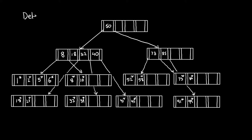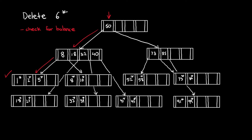Consider this B+ tree with root 50. Let's delete 6 from this B+ tree. Starting at the root, we traverse down until we find 6, then we delete it. We need to check if the tree still holds the B+ tree properties. As all entries are more than half full, this tree is a valid B+ tree, so the deletion is complete.